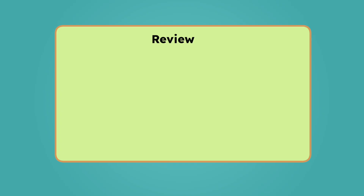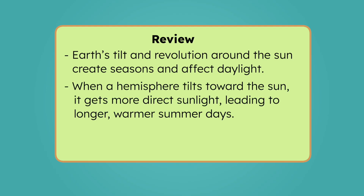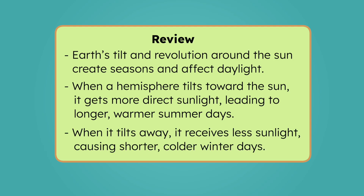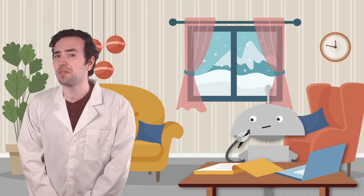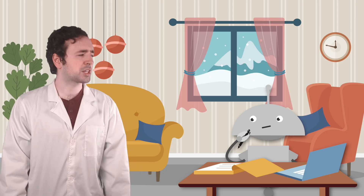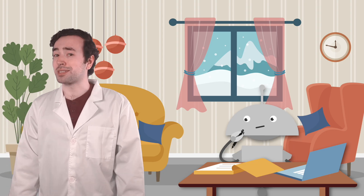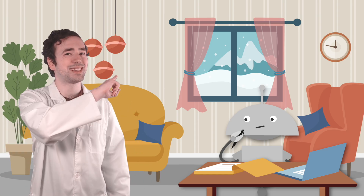Let's review everything we've learned today. Earth's tilt and revolution around the Sun create seasons and affect daylight. When a hemisphere tilts toward the Sun, it gets more direct sunlight, leading to longer, warmer summer days. When it tilts away, it receives less sunlight, causing shorter, colder winter days. To learn more about the seasons, be sure to check out the activities and practice questions that go with this lesson. A warm, sunny vacation in the middle of winter actually sounds like a great idea. Keep exploring, scientists — there's always more to discover beneath the surface. See you next time!